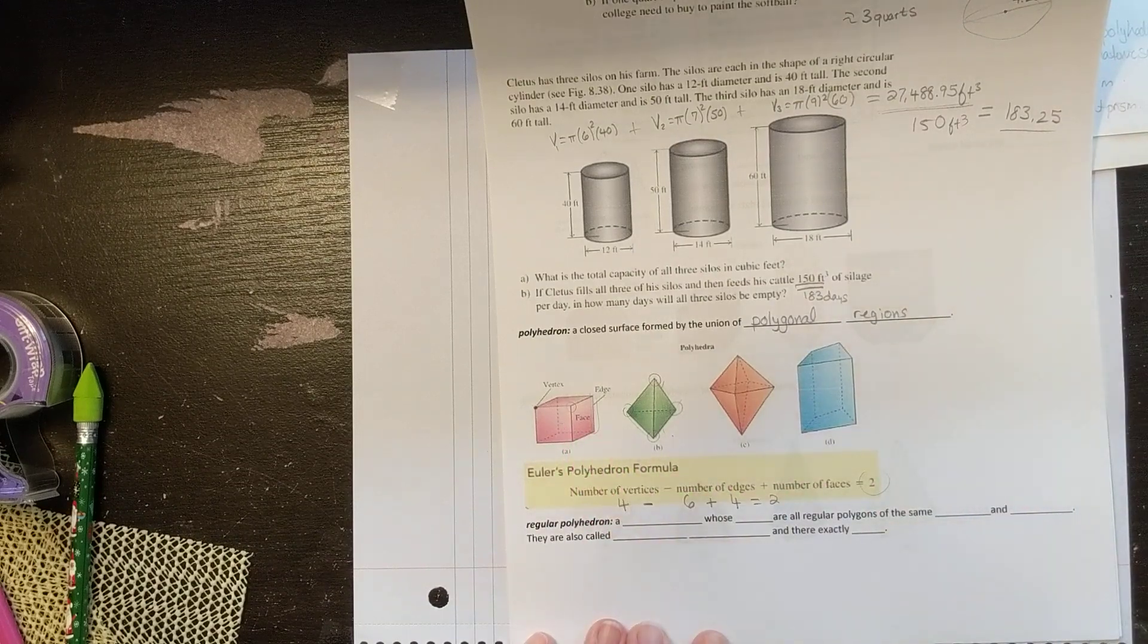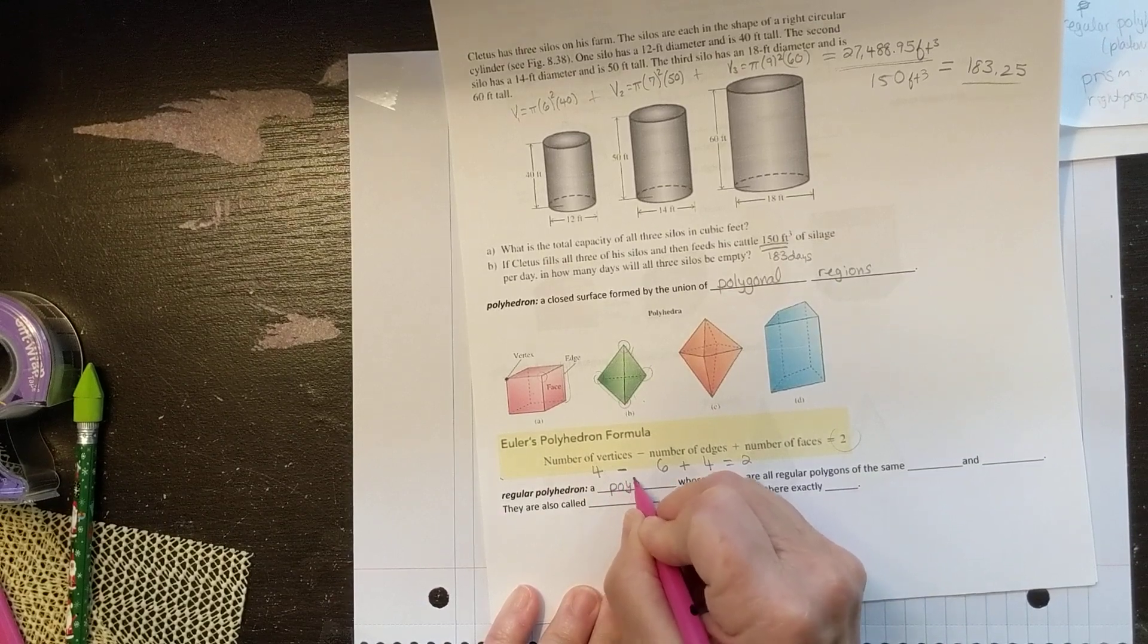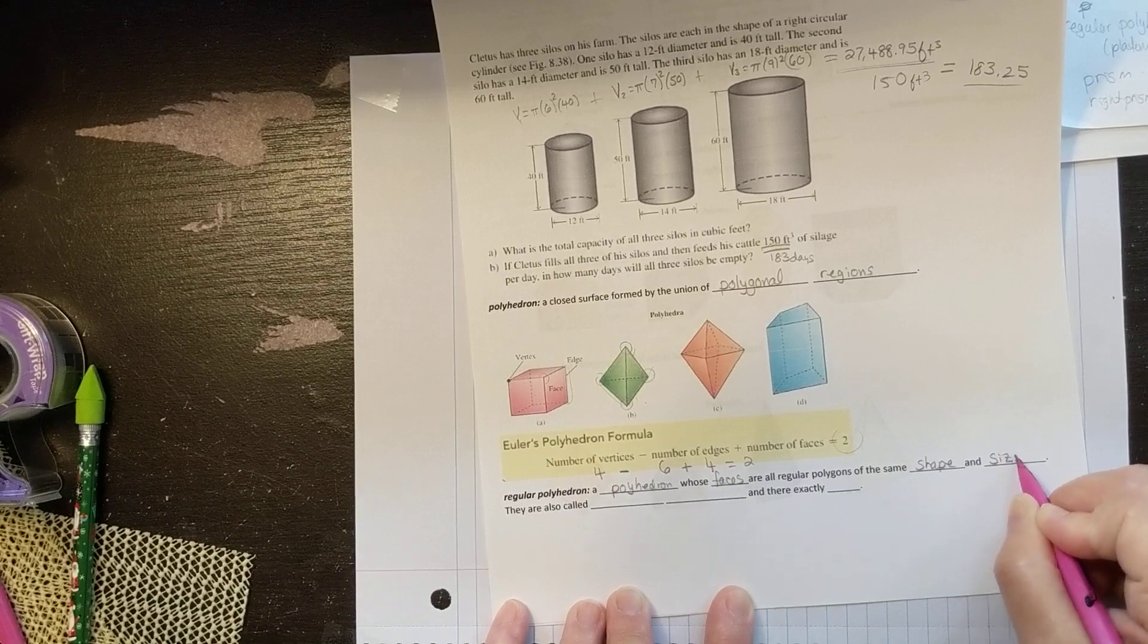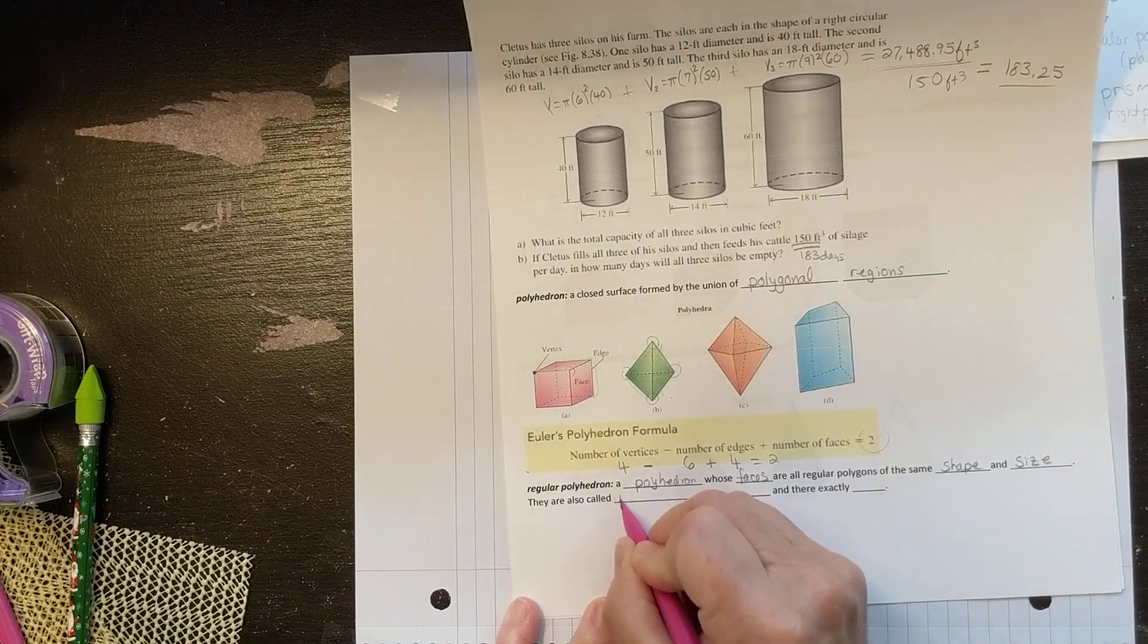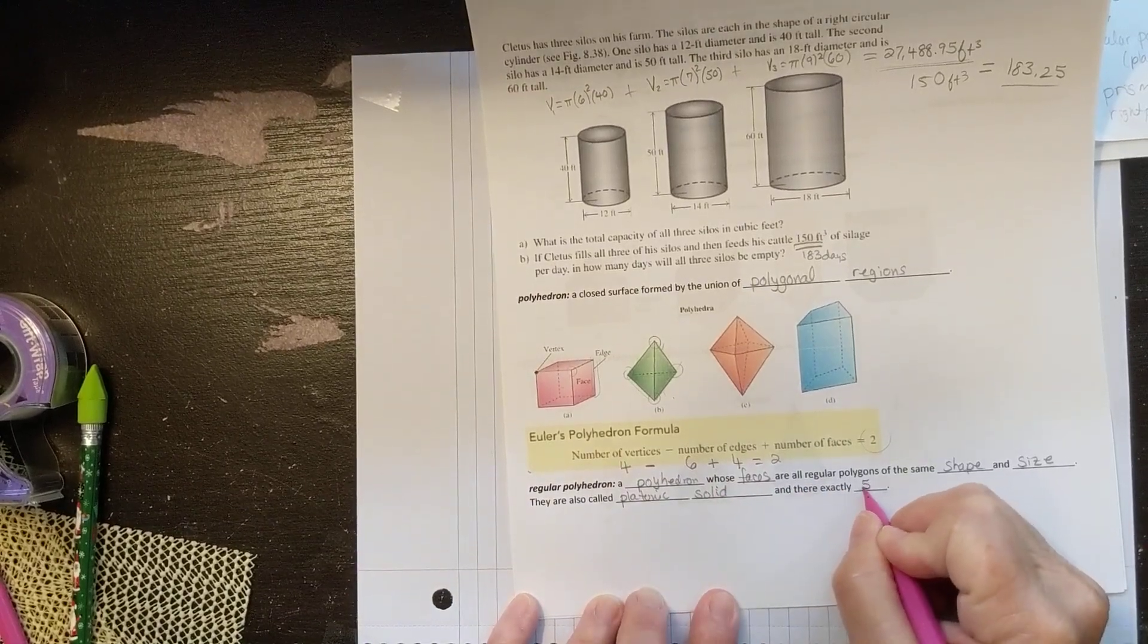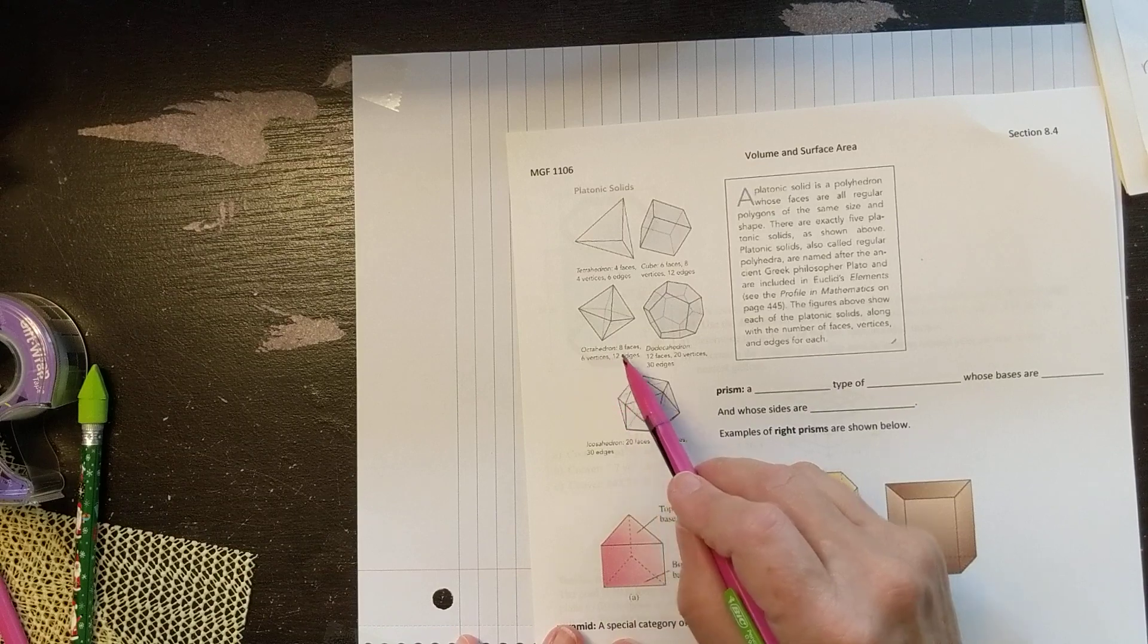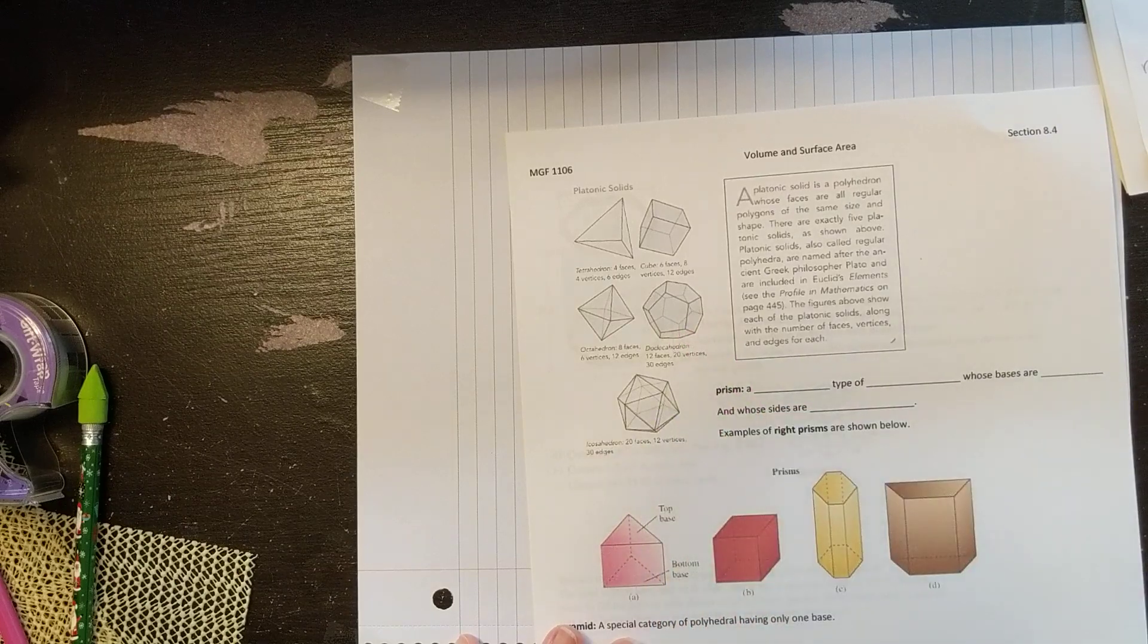I did it for this figure, you can try it on your own for that one. A regular polyhedron is a polyhedron whose faces are all regular polygons of the same shape and size. And they also have a special name, which is called platonic solid. And there are exactly five that exist. On the next page, we're going to see what those look like. There's five of these guys. One's called a tetrahedron, one is called a cube, one is called an octahedron, one is called a dodecahedron, and one is called an icosahedron. This is a soccer ball though. So you've seen that one.